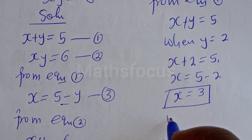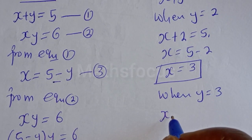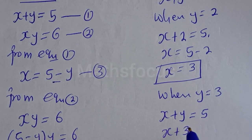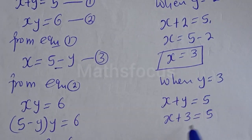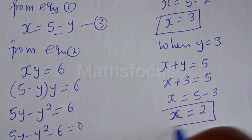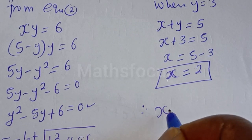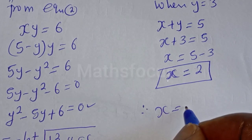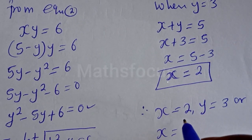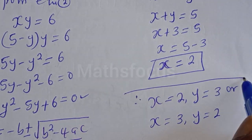Then when Y is equal to 3, we have S plus Y is equal to 5, so S plus 3 is equal to 5, giving S is equal to 5 minus 3, therefore S is equal to 2. Our final answers are: S is equal to 2 and Y is equal to 3, or S is equal to 3 and Y is equal to 2.